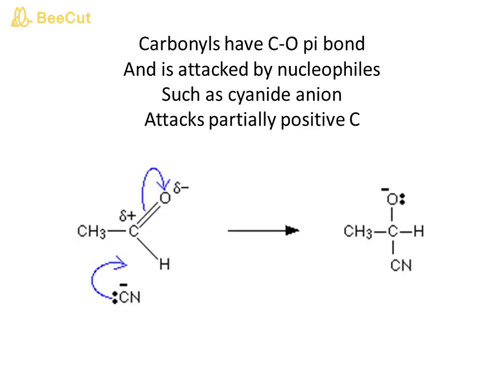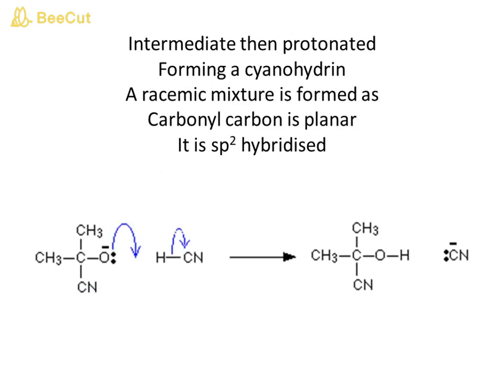Carbonyls have a C=O π bond and are attacked by nucleophiles. Cyanide ion attacks the partially positive carbon, forming an intermediate that is then protonated, producing a cyanohydrin. A racemic mixture is formed because the carbonyl carbon is planar — it is sp2 hybridized.